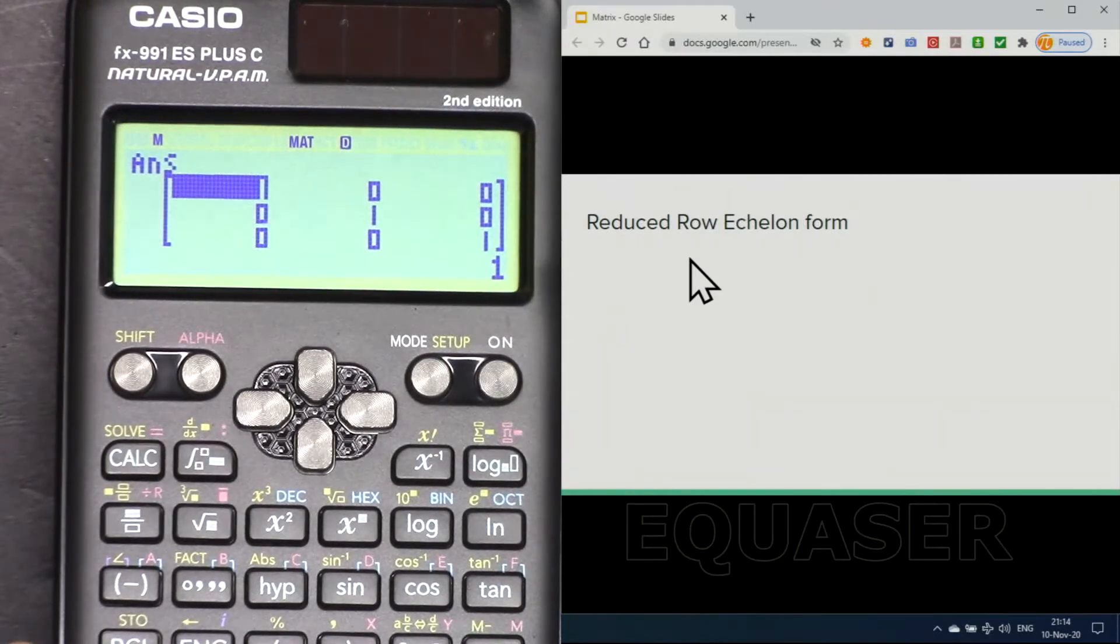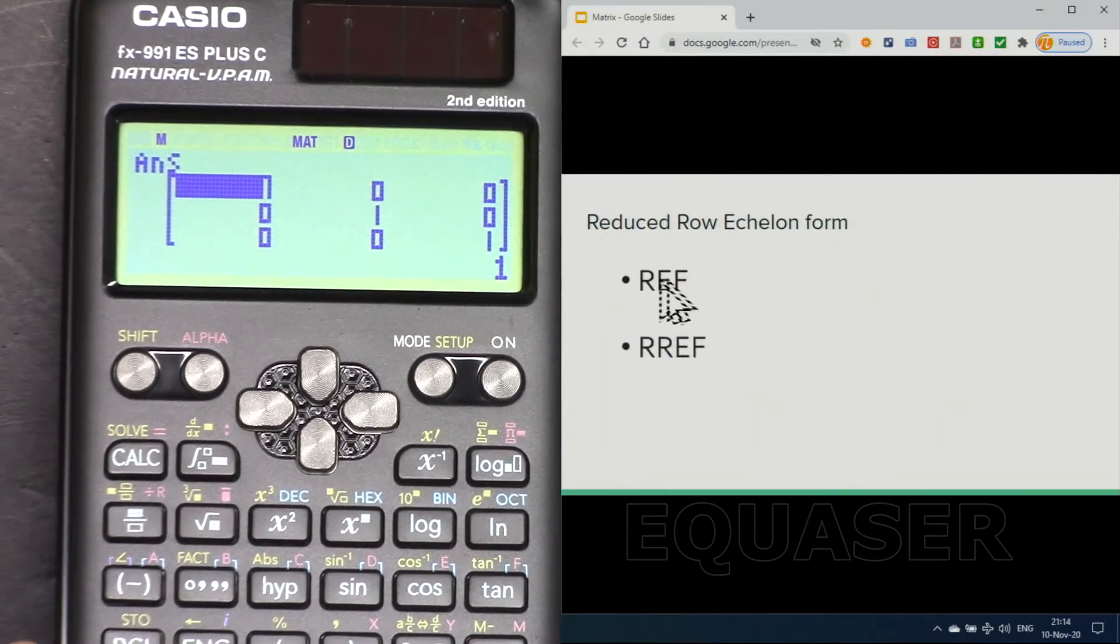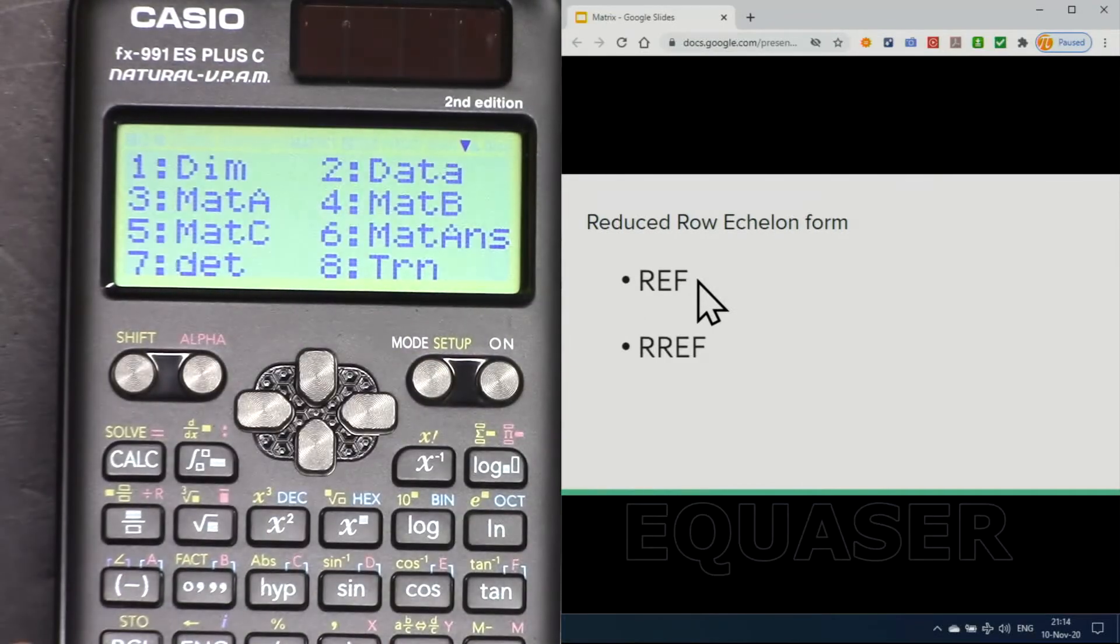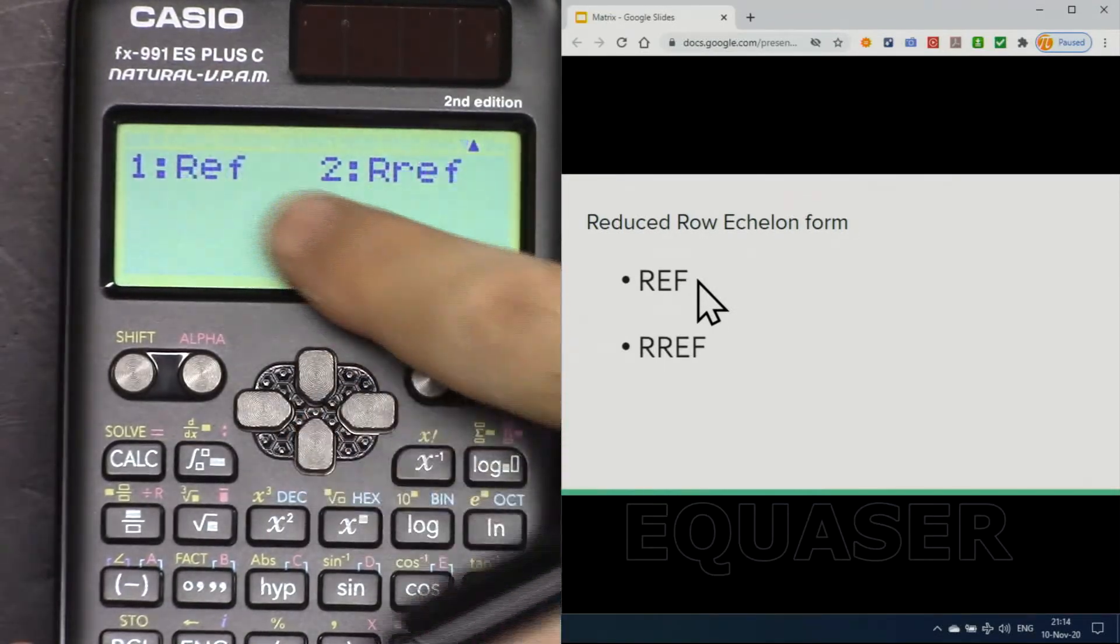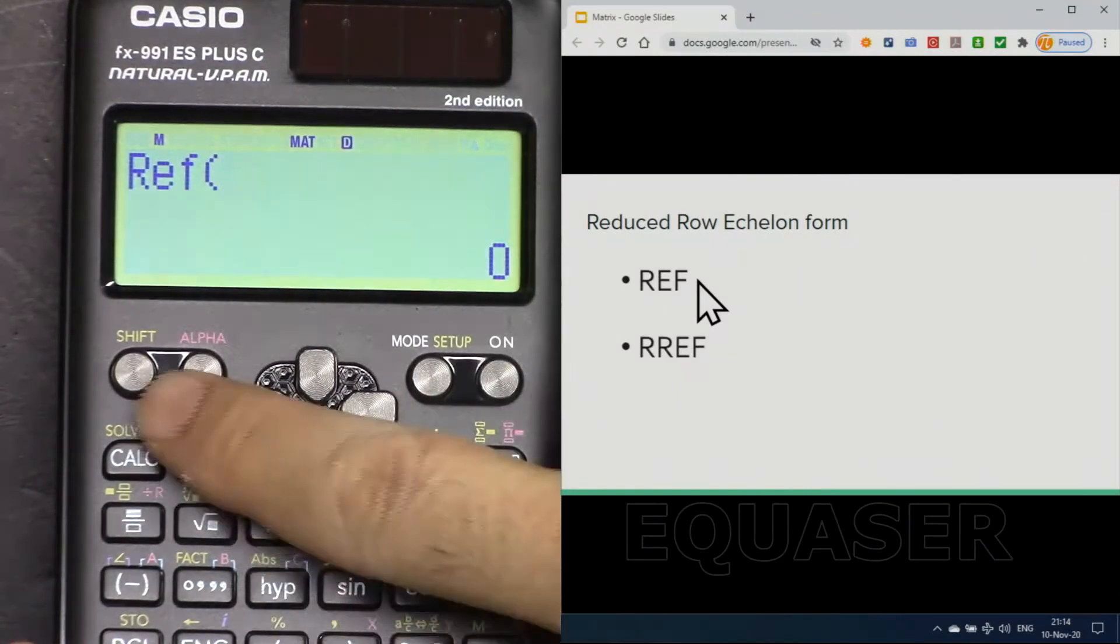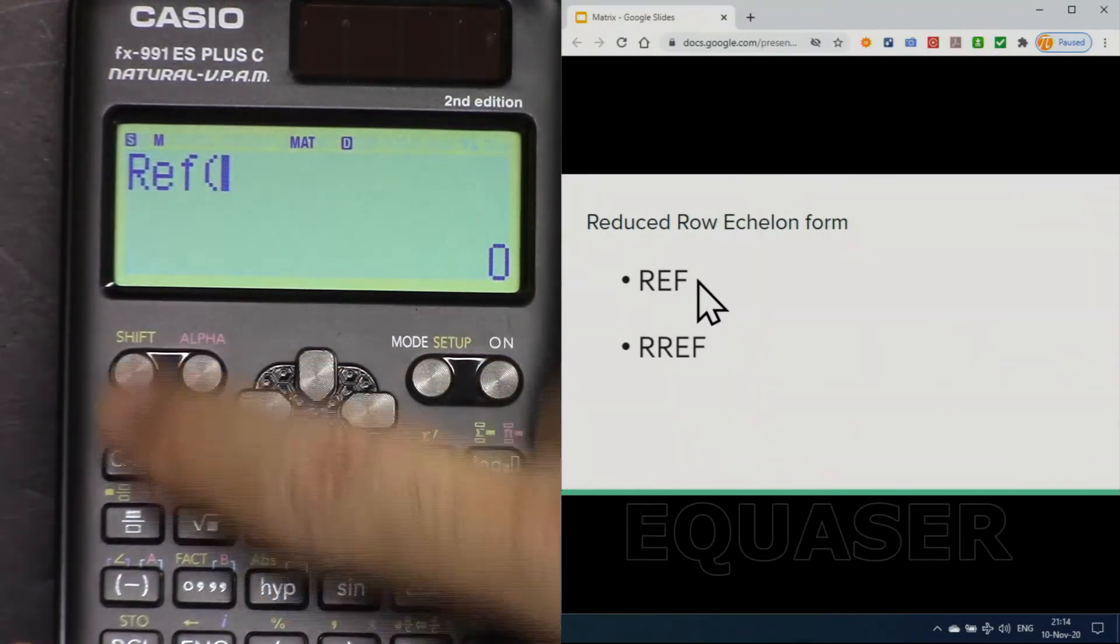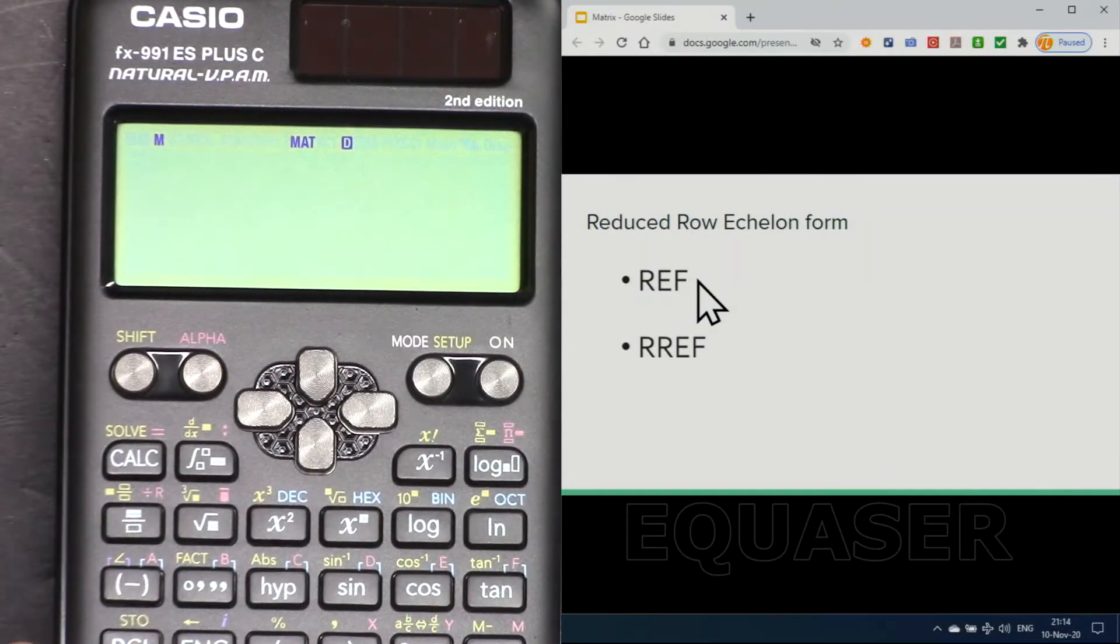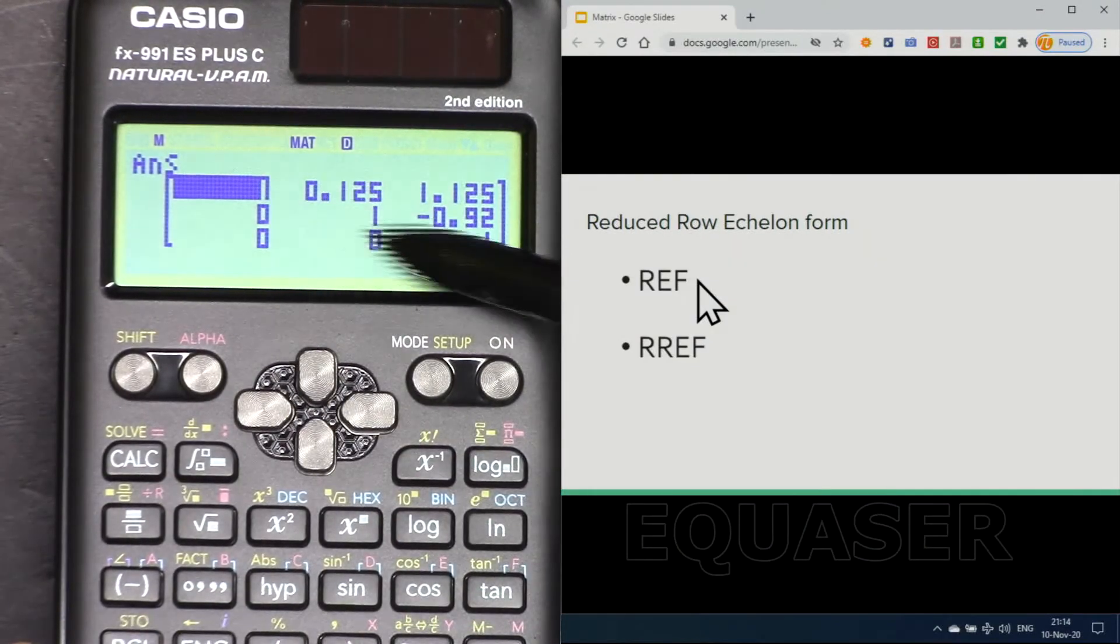And that's the reduced row echelon form. If you want to do just row echelon form, press shift matrix and then go down 1. Let's bring matrix A, shift 4 matrix A 3, close it, and that is the row echelon form of matrix A.